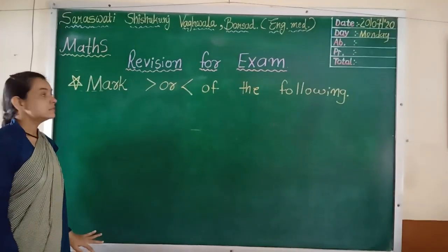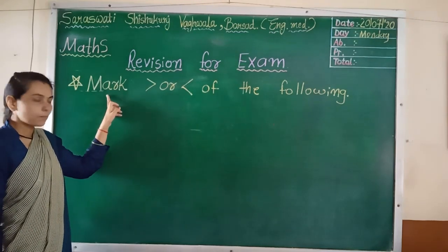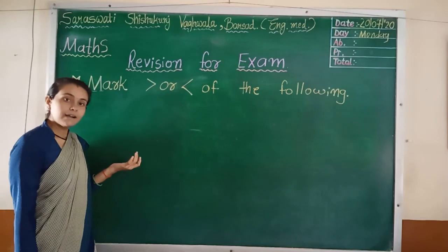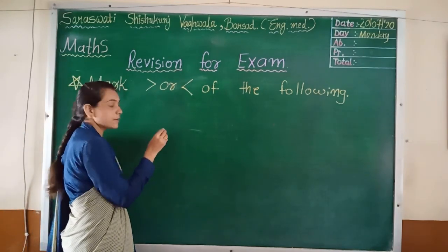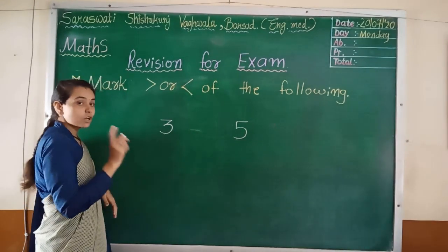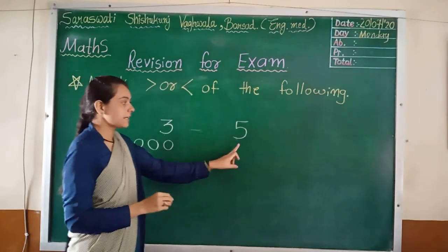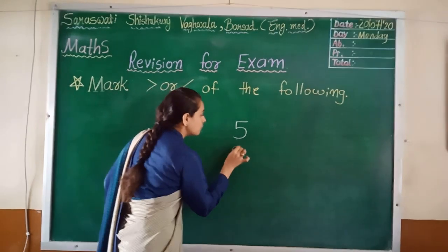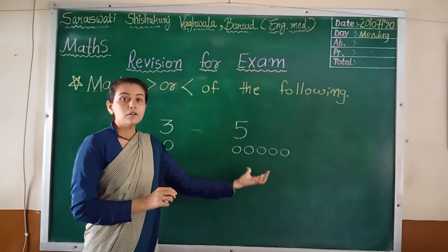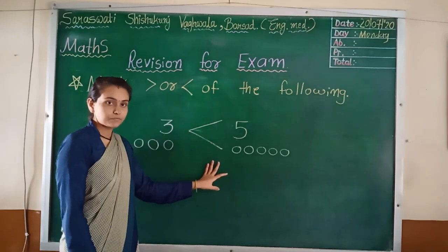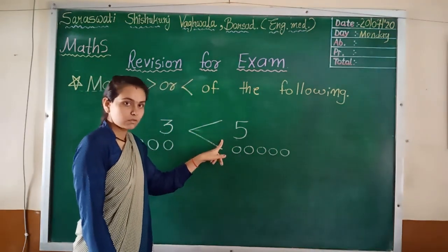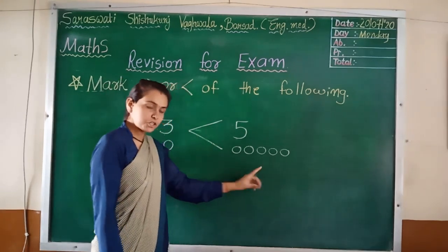Now we will take another example. Here, what is written? Mark greater than or less than for the following. So, here what you have to write is greater than or less than. For a better understanding, first I will explain one example. Suppose I write here three and here five. Here three means I will draw three circles: one, two, three. And here five means I will draw five circles: one, two, three, four, five. Now, tell me, which are more circles? Three or five? Five, right? So, you have to write less than. One thing to keep in mind: when the bigger number is there, you have to open the mouth toward the bigger number.